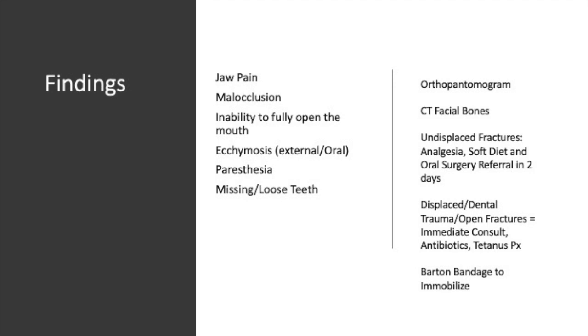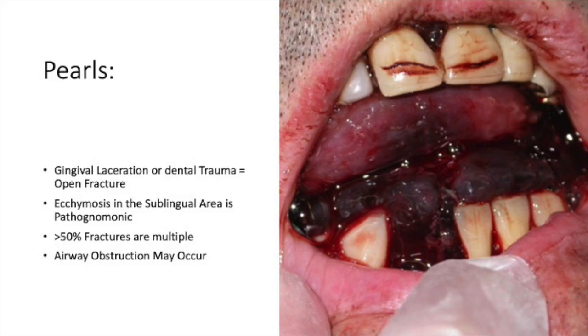In the meantime, you can immobilize the jaw with a bandage called the Barton bandage. Some pearls: whenever you see a gingival laceration or dental trauma, consider it an open fracture. Ecchymosis within the oral cavity below the tongue or blood in the sublingual area is pathognomonic of a mandibular fracture. More than 50% of mandibular fractures occur at more than one location. As this is in the oral cavity, always consider the possibility of airway obstruction.